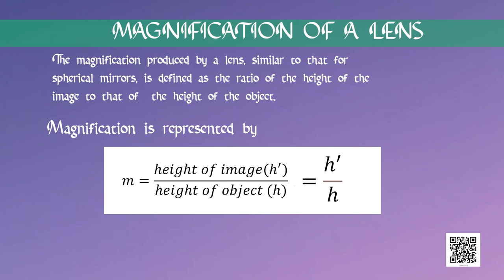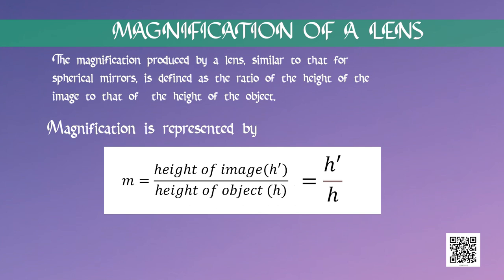Magnification of a lens: the magnification produced by a lens, similar to that of spherical mirrors, is defined as the ratio of the height of the image to that of the height of the object. Magnification is represented by small letter m. If h is the height of the object and h' is the height of the image given by the lens, then m equals h' upon h. Magnification is also related to the object distance u and the image distance v, given by m equals h'/h equals v/u.